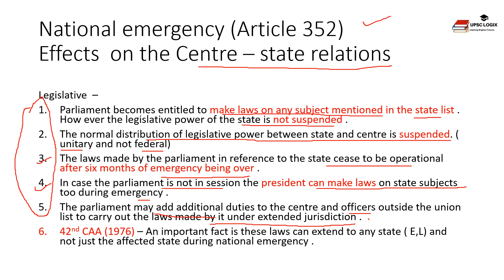The fifth legislative point is that Parliament can confer powers and impose duties upon the center and its officers in respect to matters outside the Union List, to carry out laws made under the extended jurisdiction due to emergency. The sixth point, added by the 42nd Constitutional Amendment Act of 1976, is that laws made under executive and legislative effects on center-state relations can be extended to any other state, not just the affected state, even if national emergency was declared only in one state.